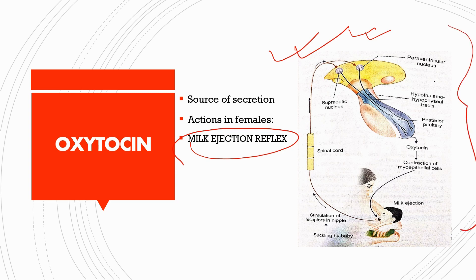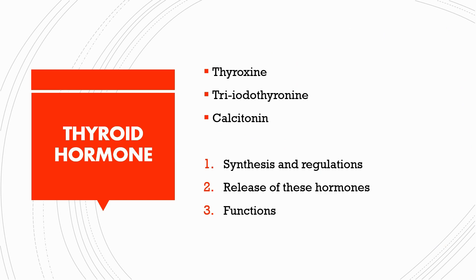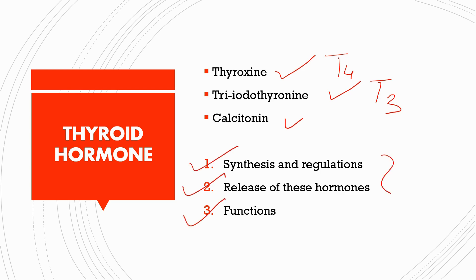Next we have the thyroid hormones. The thyroid gland secretes three main hormones: thyroxine (T4), triiodothyronine (T3), and calcitonin. Its synthesis, regulation, release, and functions are the most important topics and must be included in your answer. In the next slide we will provide you the synthesis and regulation chart.